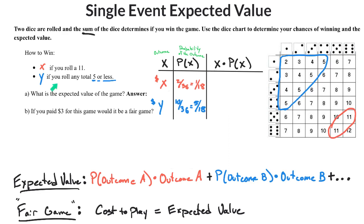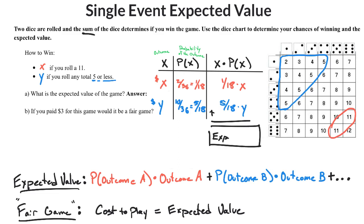Those are your only two outcomes in this particular game. The outcome is X or Y, and the probabilities are 1/18th and 5/18th respectively. So your expected value is (1/18)·X + (5/18)·Y. Remember, expected value is not the most likely outcome — it's what happens on average if you were to play this game many times, meaning your total winnings divided by how many times you played.